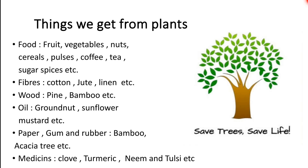We get fiber from cotton, jute, linen, etc. We get wood from teak, pine, bamboo, etc. We get oil from groundnut, sunflower, mustard, etc.